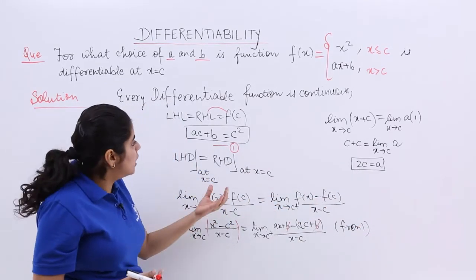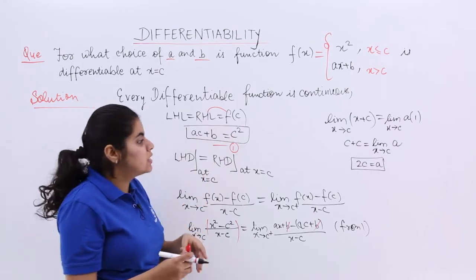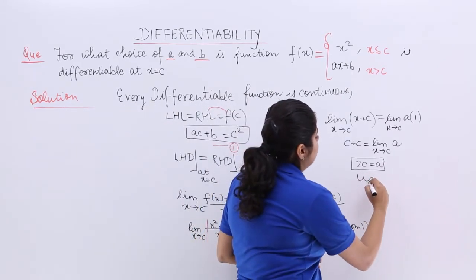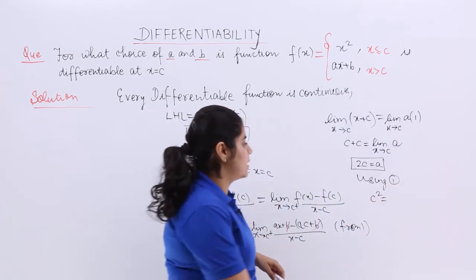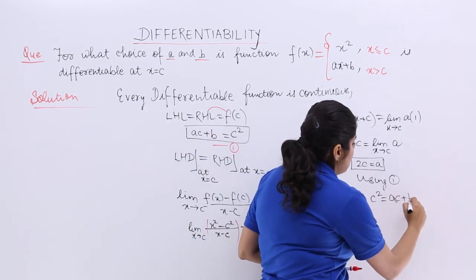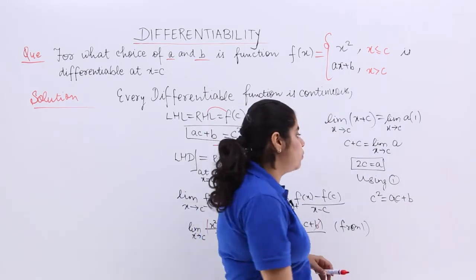But, what about B? Here, I have this expression. Let's use this expression using equation 1. Let me write it again. C square is equal to Ac plus B. I need to find out the value of B.